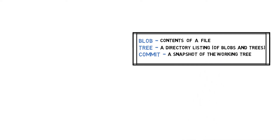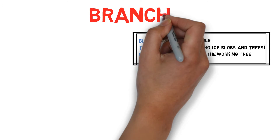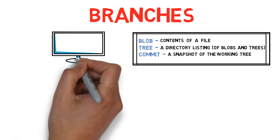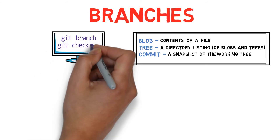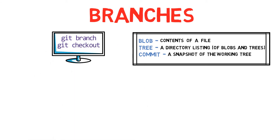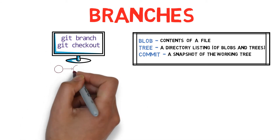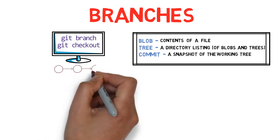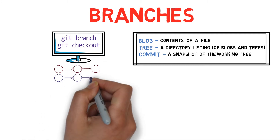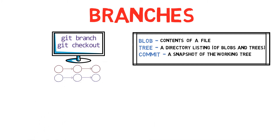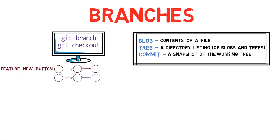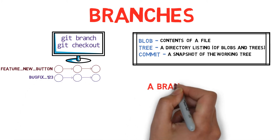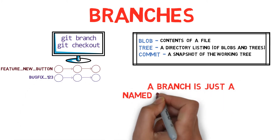In this video, we'll talk about branches. We'll understand how they are implemented and what the commands git branch or git checkout actually do behind the scenes. We usually think about branches as a sequence of changes that are related to each other — for example, one branch dedicated for a single feature and another branch for a specific bug fix. But under the hood, a branch is just a named reference to a commit.